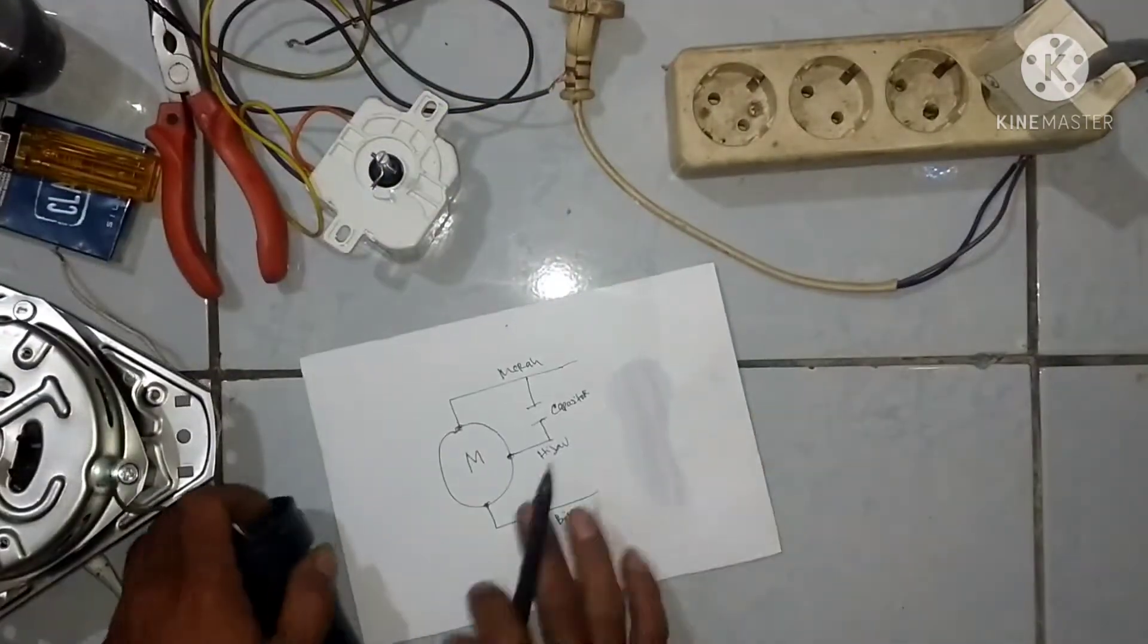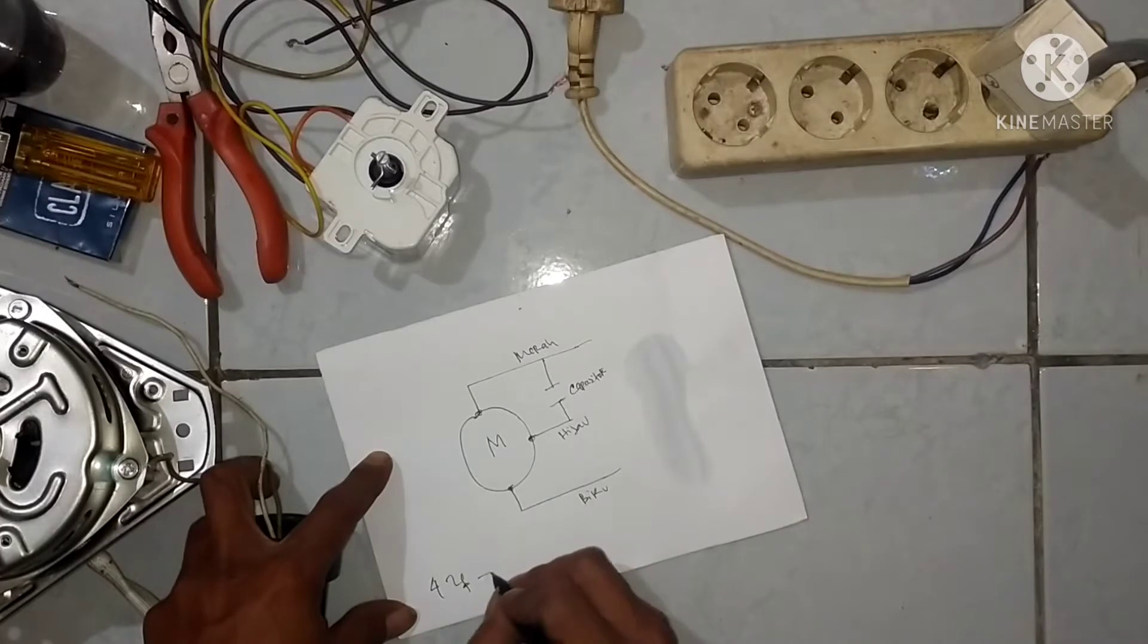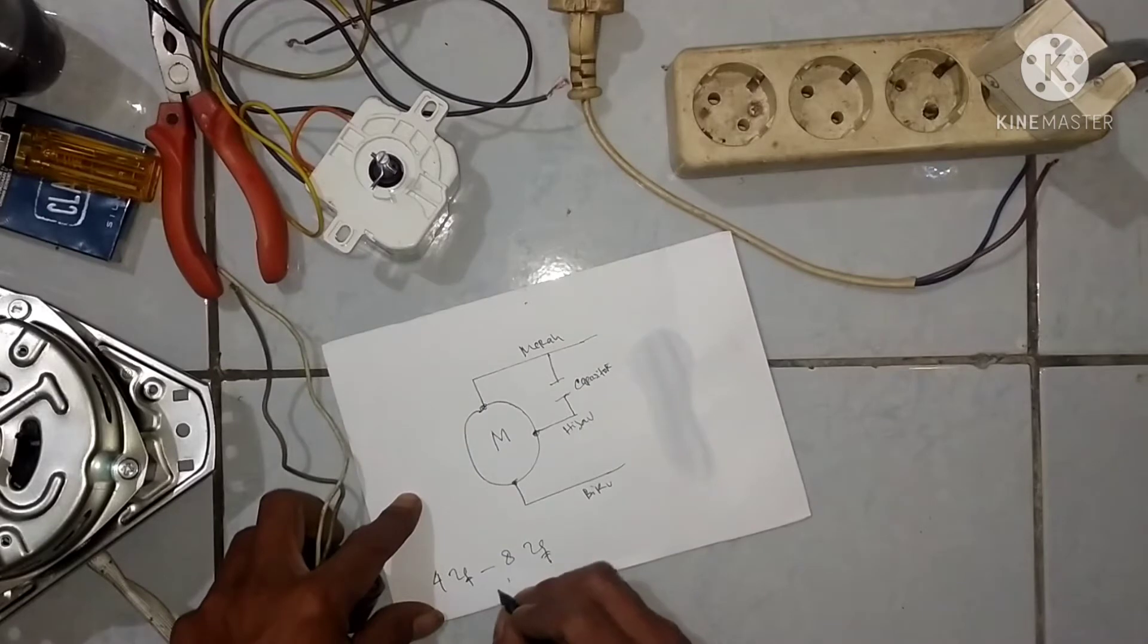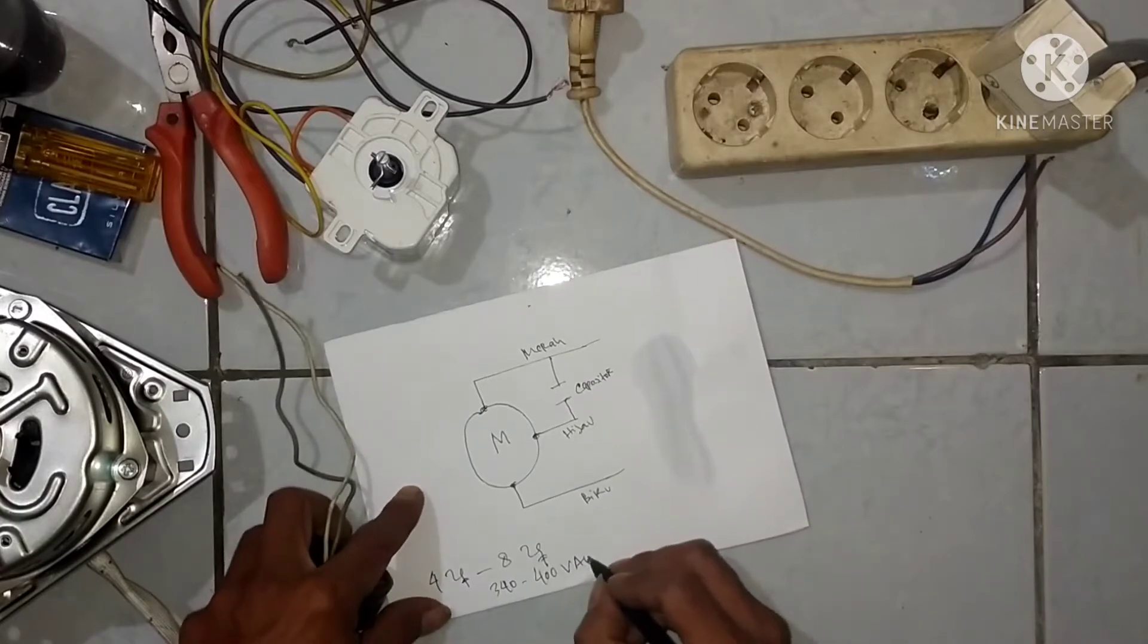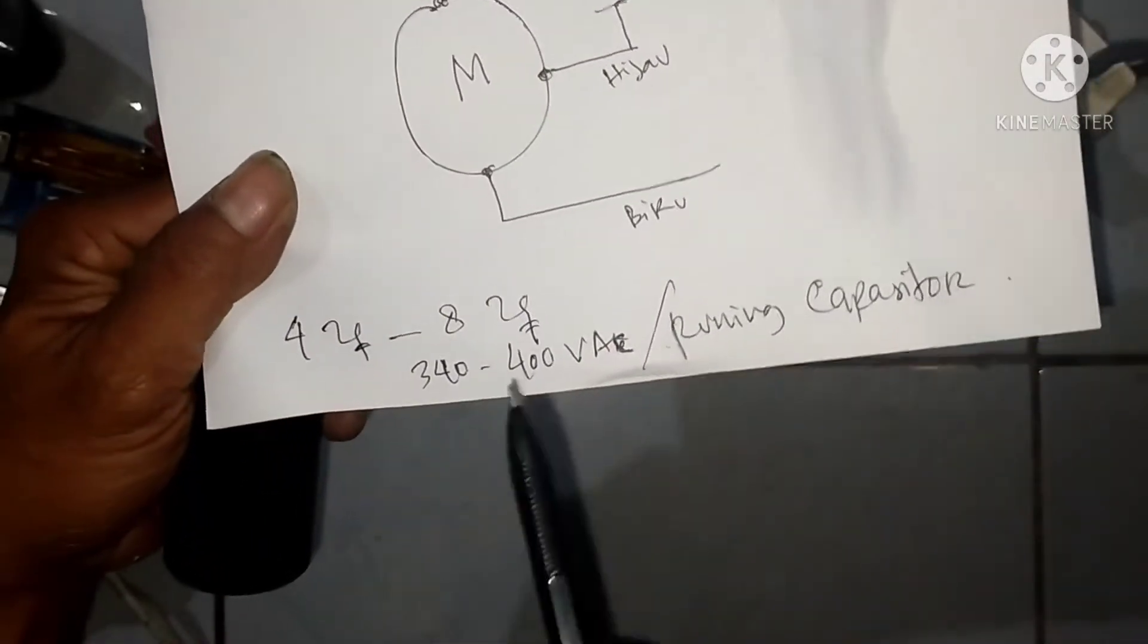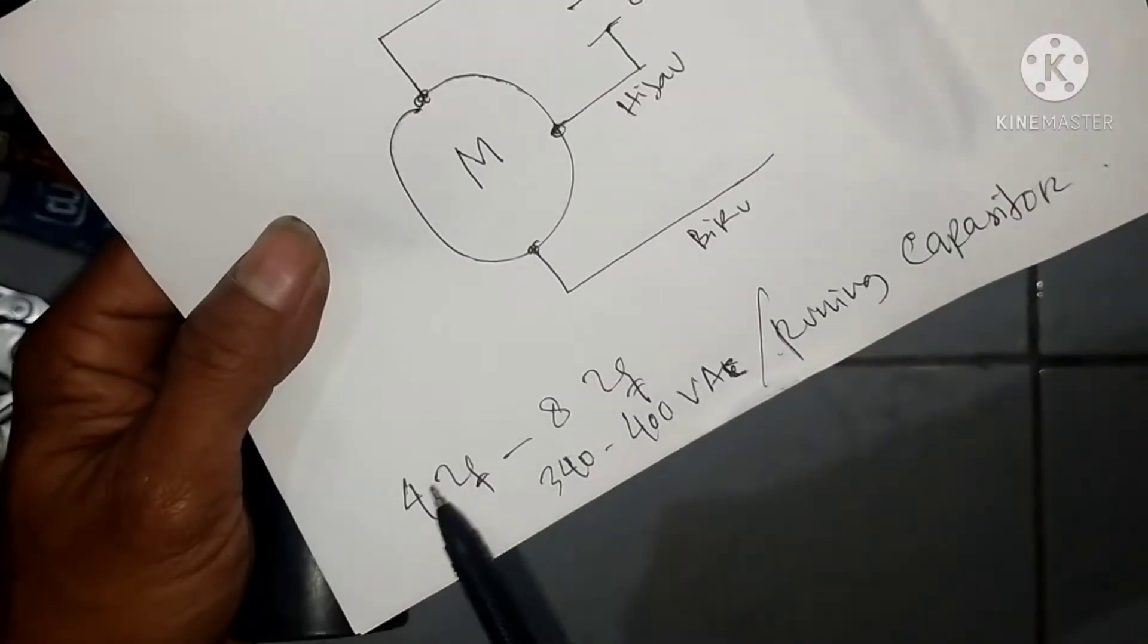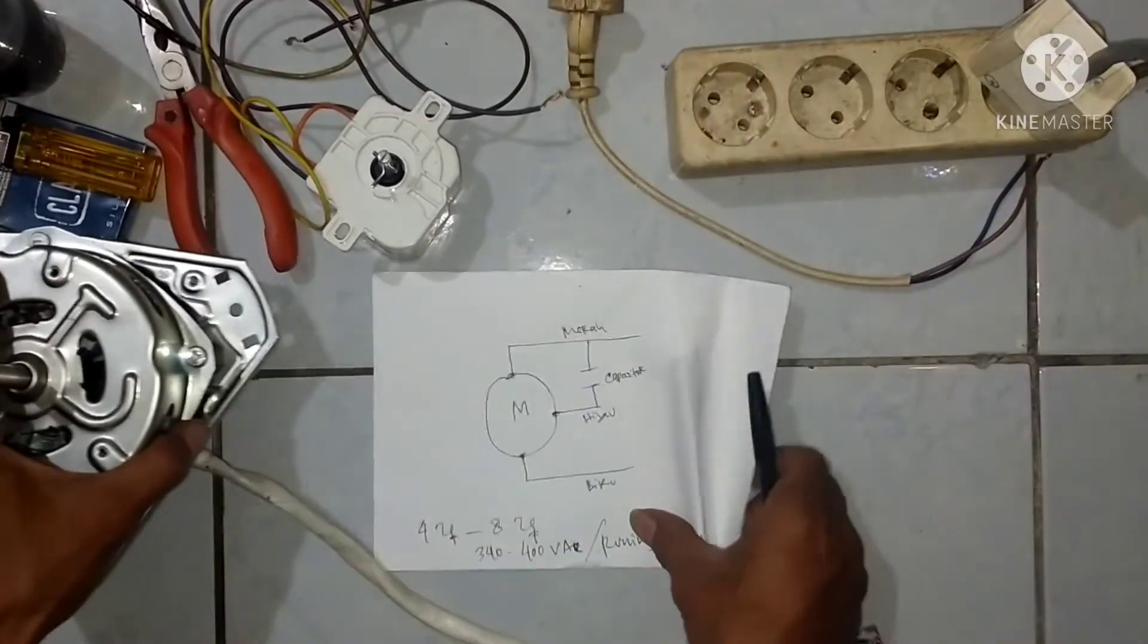Kapasitor itu untuk mesin pencuci atau spin biasanya mulai dari 4 mikro farad sampai 8 kira-kira teman-teman. Dan jangan lupa portnya yang harus dipakai untuk mesin cuci yang 300-an sampai 450 volt, bukan 220 volt. Karena ini buat mesin pencuci atau pengering, ini spesialis buat mesin cuci. 4 dan 8 running kapasitor, namanya running kapasitor bukan stabil.